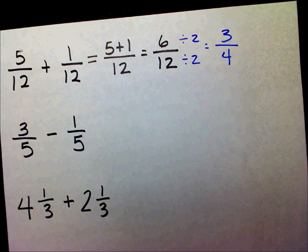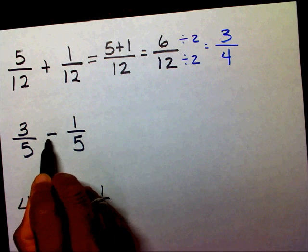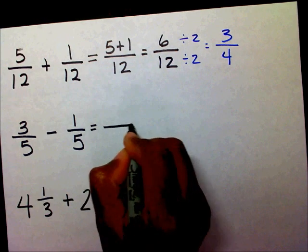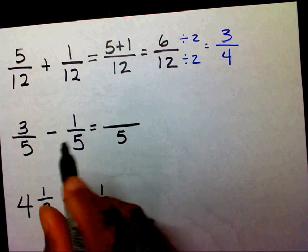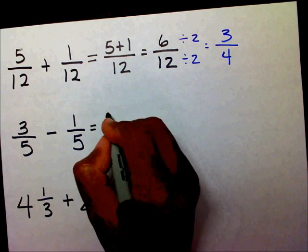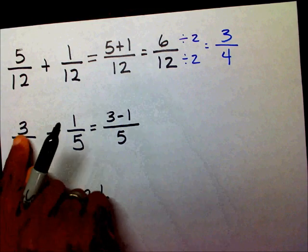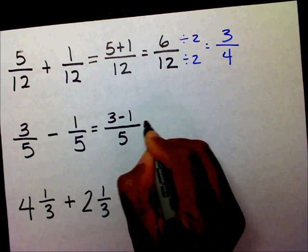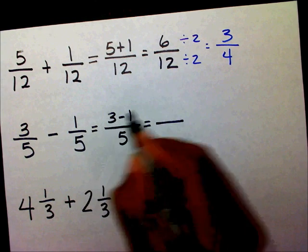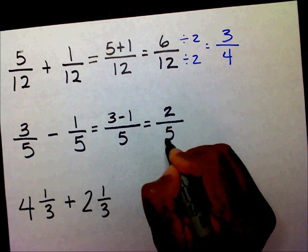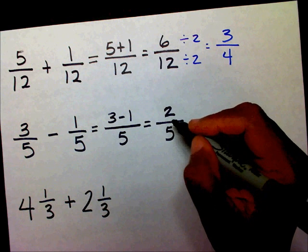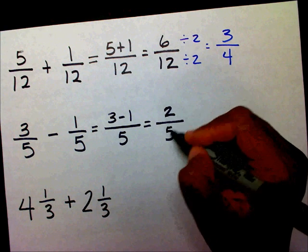The next problem, I'm subtracting. Again, I have the same denominator, which is great. So I'm just going to use my same denominator. And I have 3 minus 1. So now I'm going to subtract 3 minus 1, which is 2, and bring my 5 over. 2/5, the only factor that they share is 1. So therefore, this is already in lowest terms.